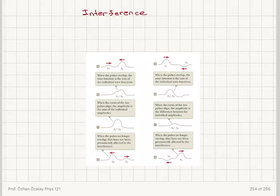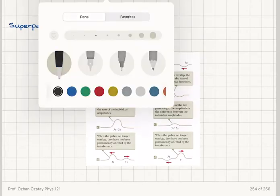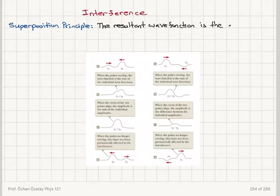We're going to discuss interference of waves. The question is: if two or more waves are traveling in the same medium and they meet to give a resultant wave, how can we express the wave function of the resultant wave? The answer is given by the superposition principle, which states that if we have a linear medium, the resultant wave function is the algebraic sum of the individual wave functions — we just add them up.